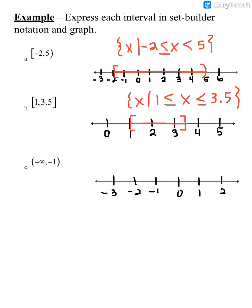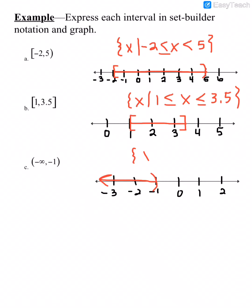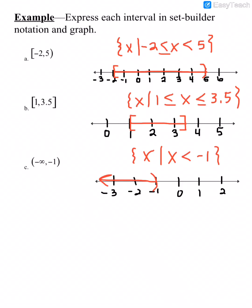For our last interval going from negative infinity to negative 1: we'll have an arrow going to the left because we're going to negative infinity. Negative 1 is not included, so we put a parenthesis on negative 1 on the number line and draw a line going to the left with an arrow at the end. For set builder notation: squiggly bracket X such that X is less than negative 1, then close it.